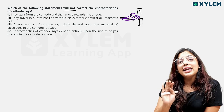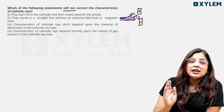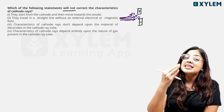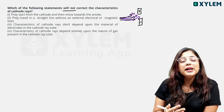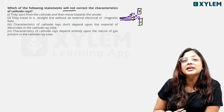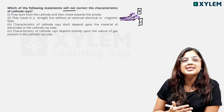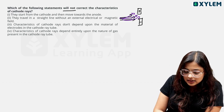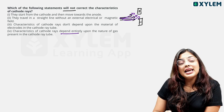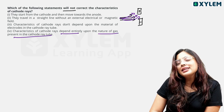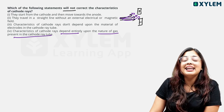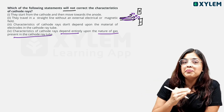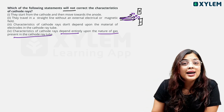The cathode ray discharge tube is made of gas; the electrodes are made of different materials, yet the cathode rays have the same properties regardless of the material or gas used. This statement is correct. However, the statement that the characteristics of cathode rays depend entirely upon the nature of gas present in the cathode ray tube is incorrect — cathode rays do not depend on the gas; it is the anode rays that depend on the nature of the gas.